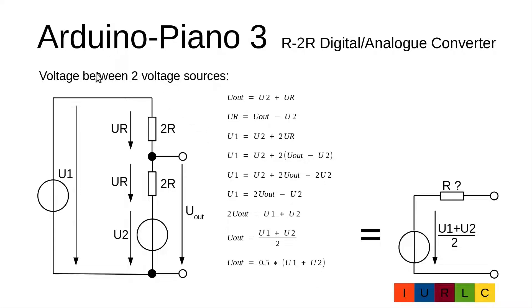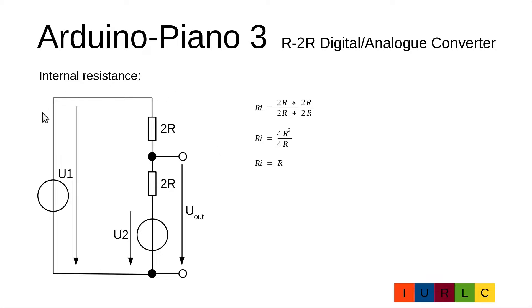This means we can replace this complete circuit by an equivalent circuit with an internal voltage source of (U1 plus U2) divided by 2, and a still unknown internal resistance. To find the total resistance: if the two voltage sources are zero, we can replace them by a short, and then we see that the two 2R resistors are in parallel. The two parallel resistors have a total resistance of R, so the internal resistance is R. This is valid for all cases, even when the voltage sources are not zero.